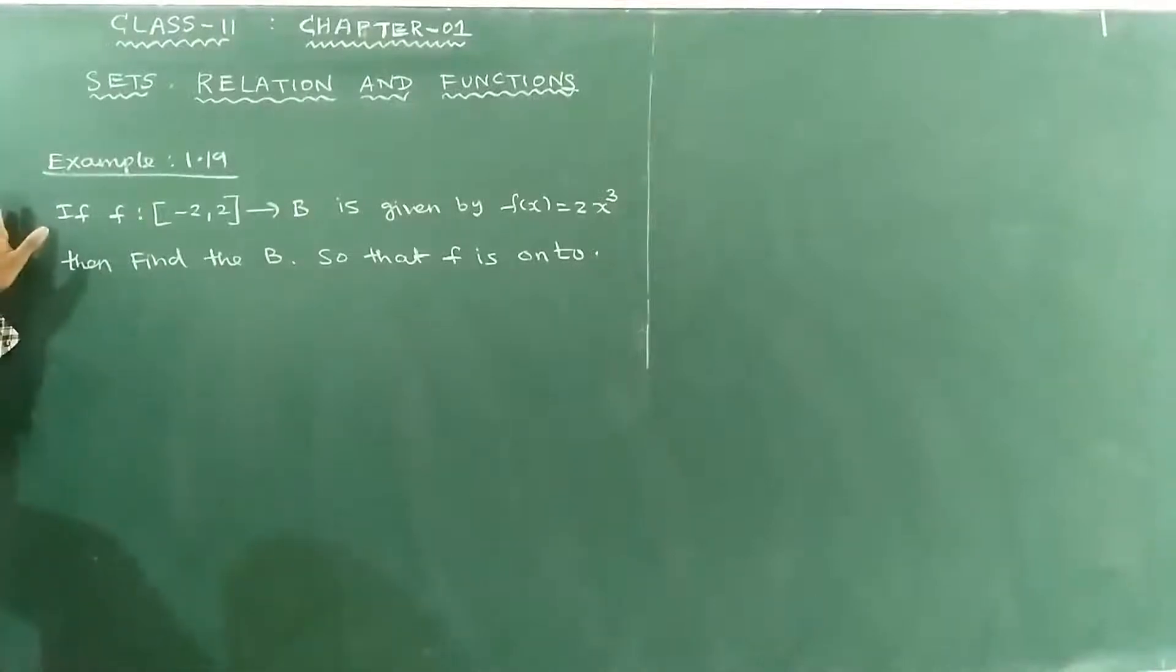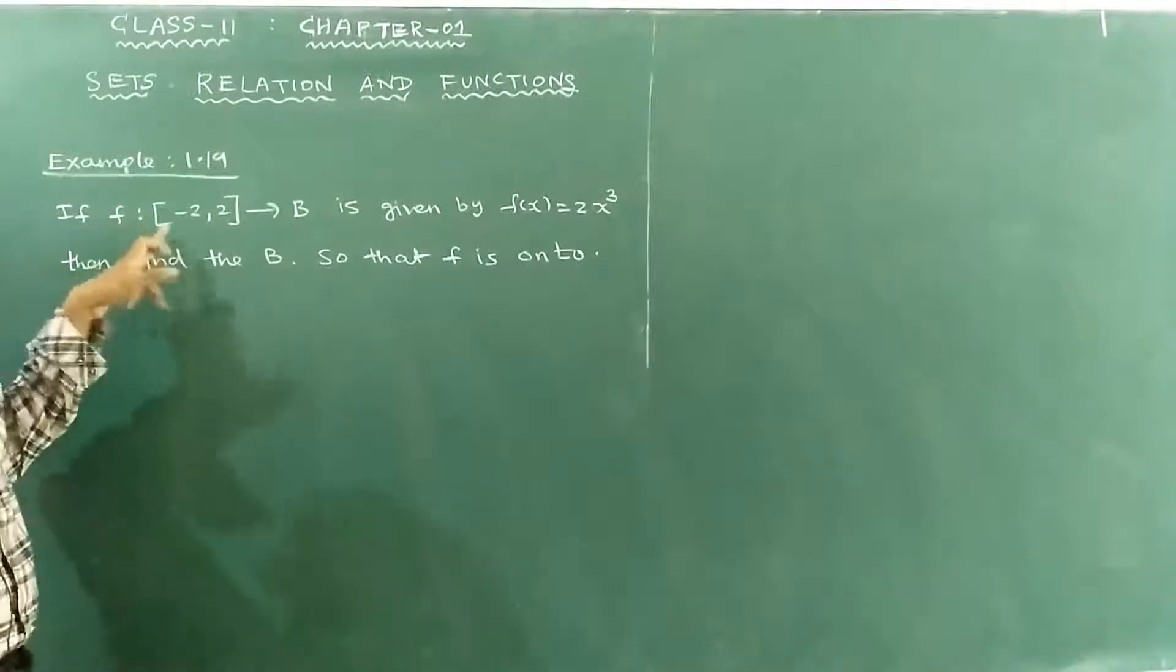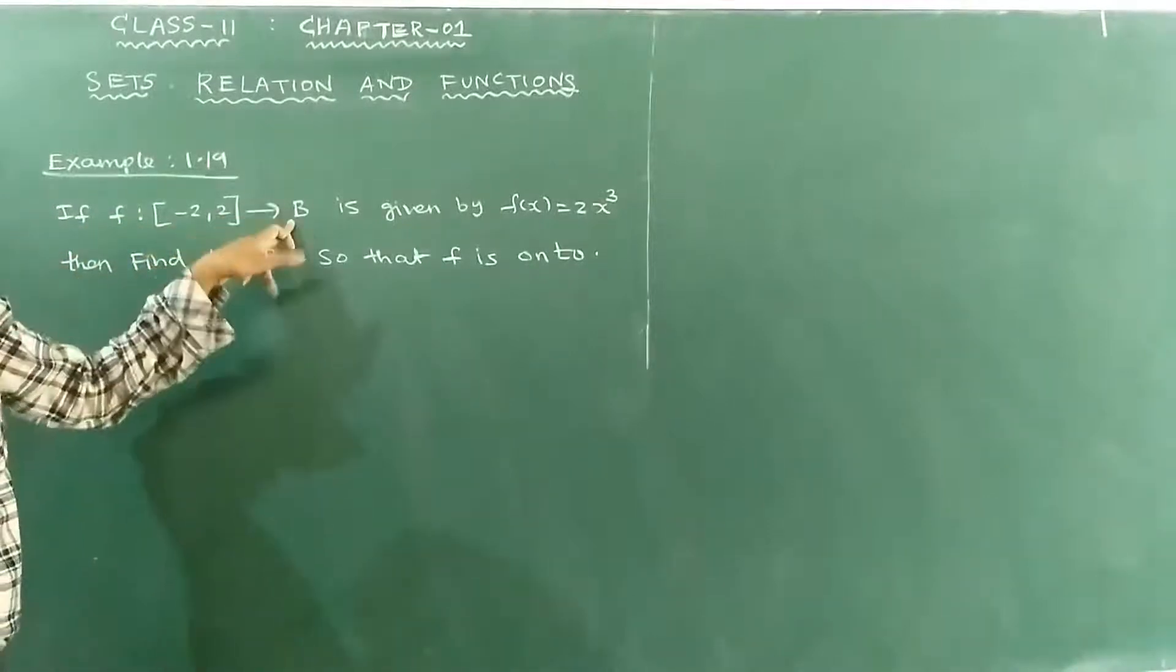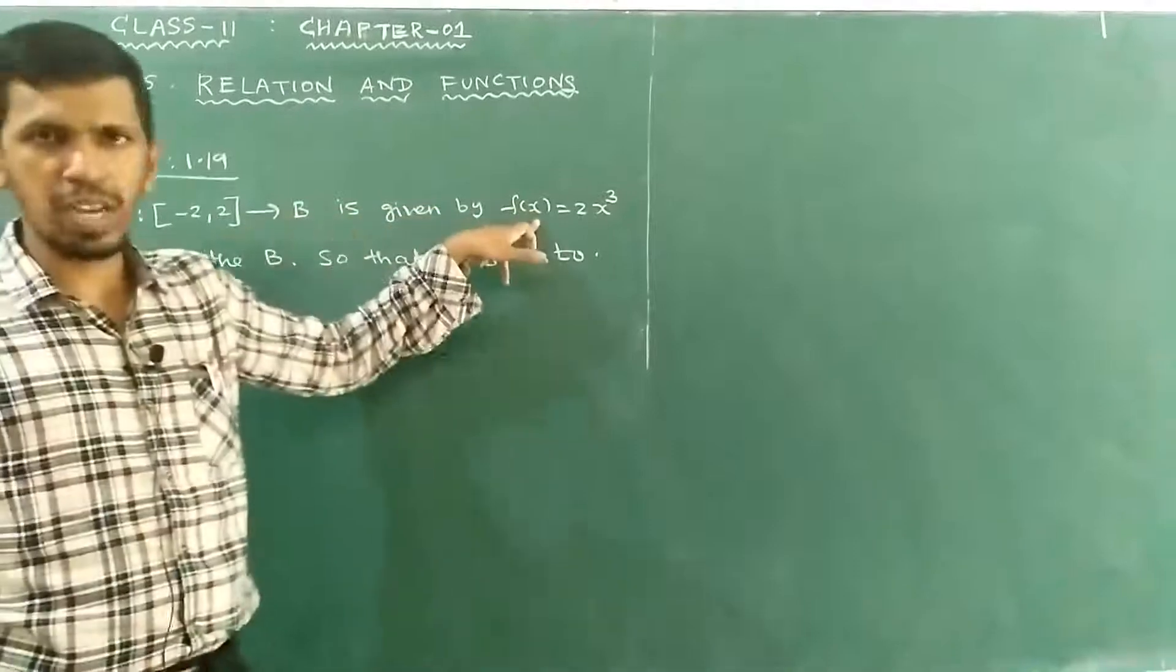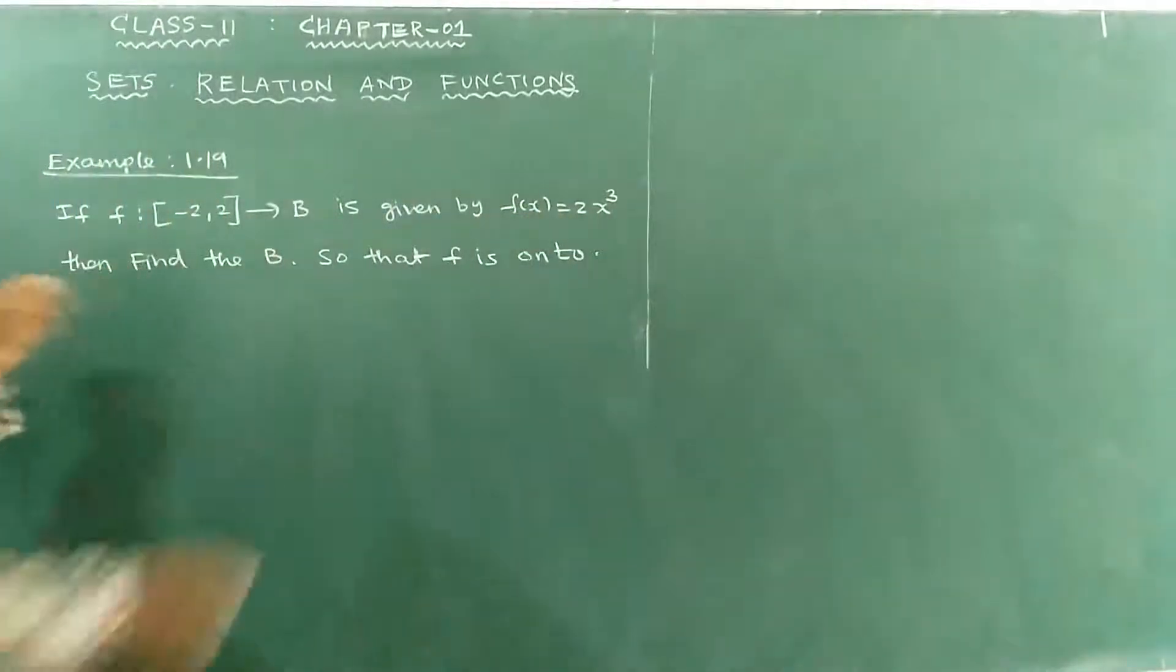Salamakans friends. Example 1.19. If f such that the interval [-2, 2] goes to B is given by the function f(x) = x³, then find the B.